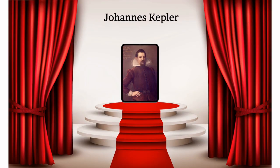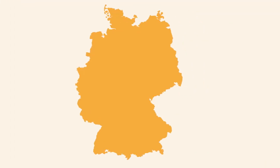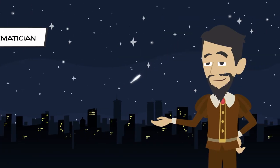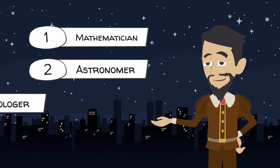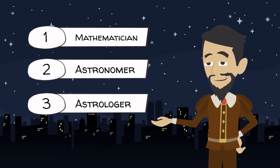Johannes Kepler, born 1571 in Weiderstadt, today's Stuttgart region, Germany, was a renowned mathematician, astronomer, and astrologer.